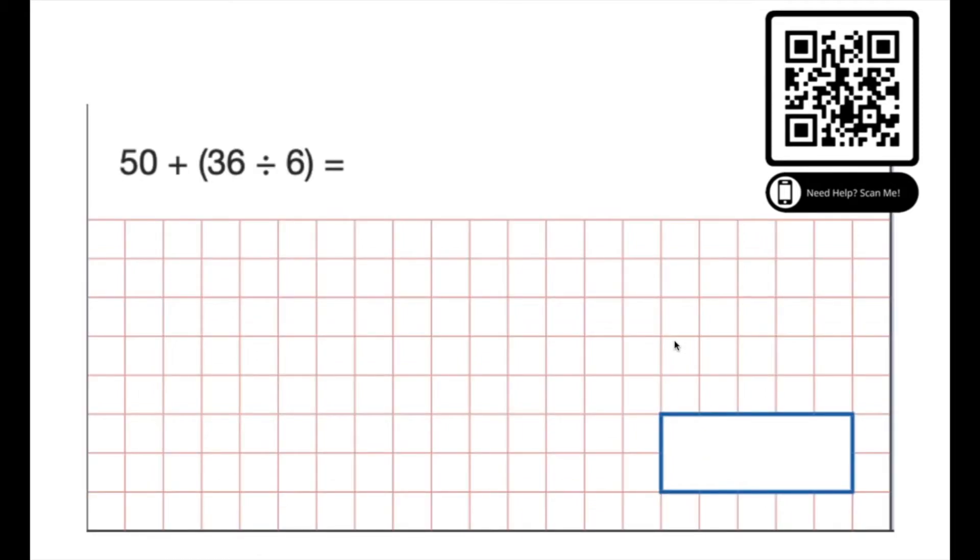Okay last one then, we've got brackets in this case so we're always going to do that one first. 36 divided by 6, there are 6 sixes in 36, and then we're going to do the addition, 50 plus 6 is 56.